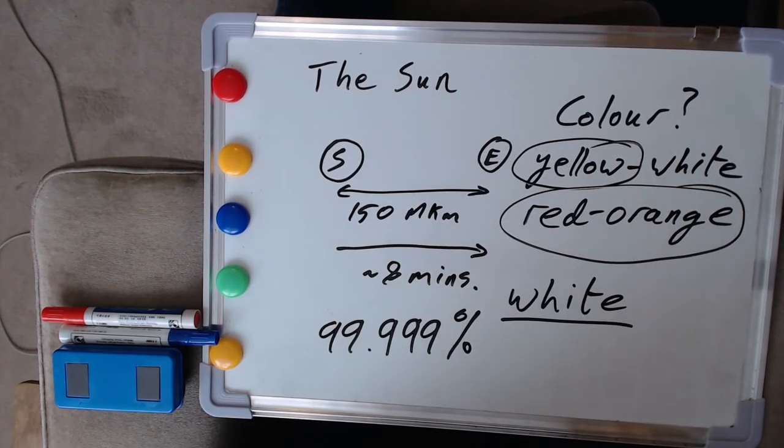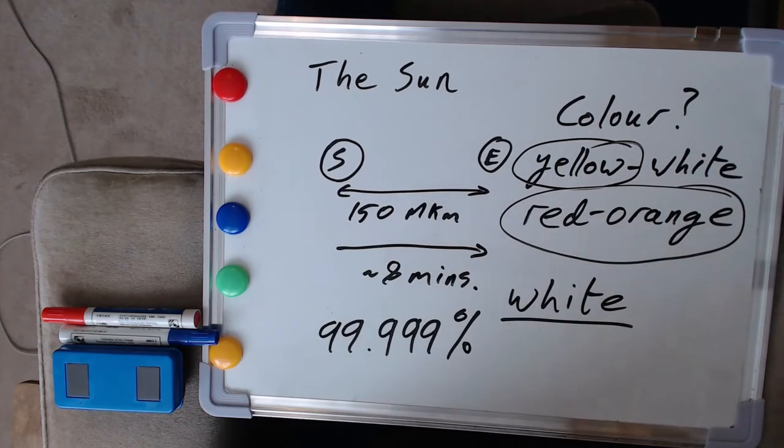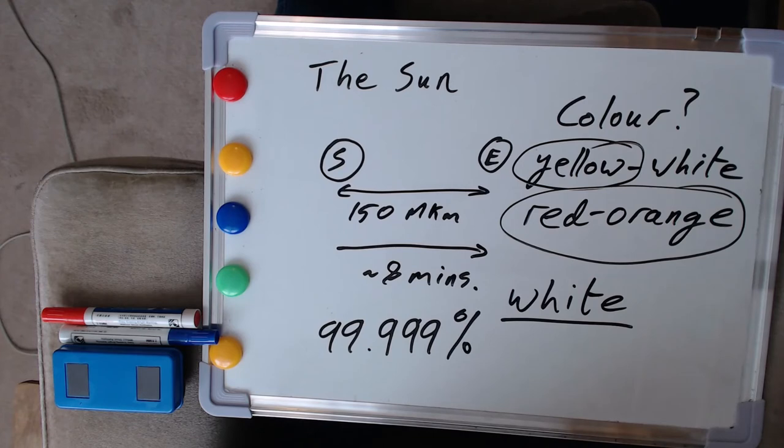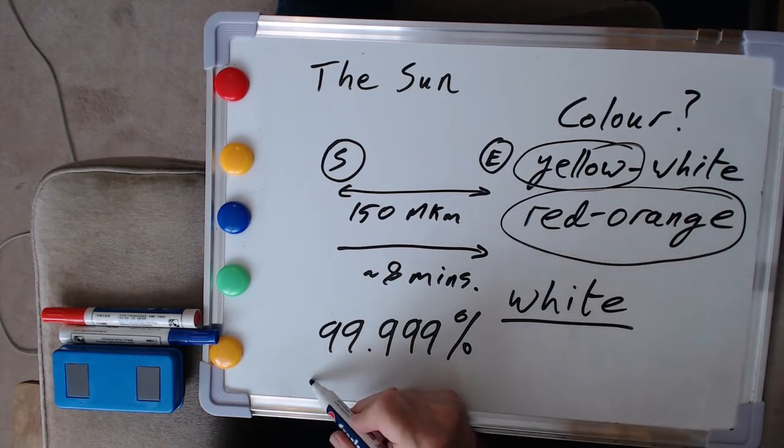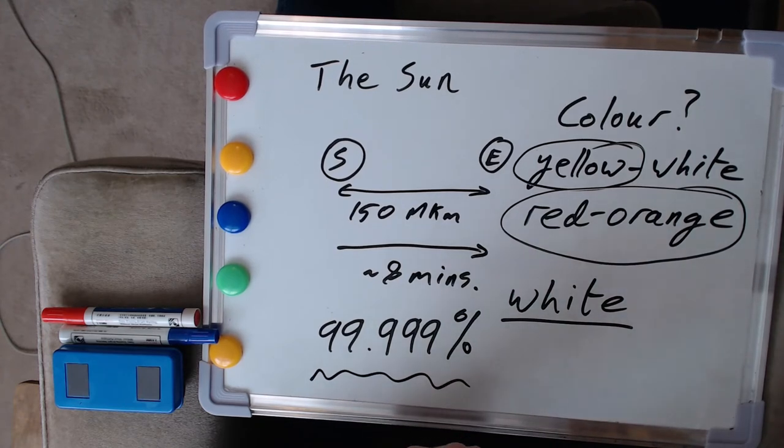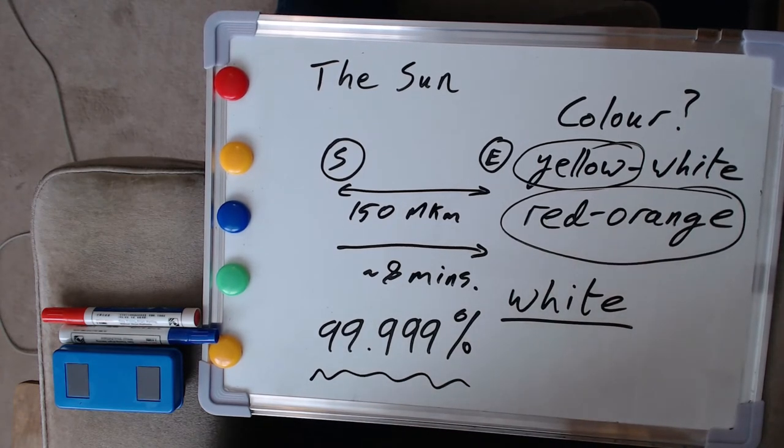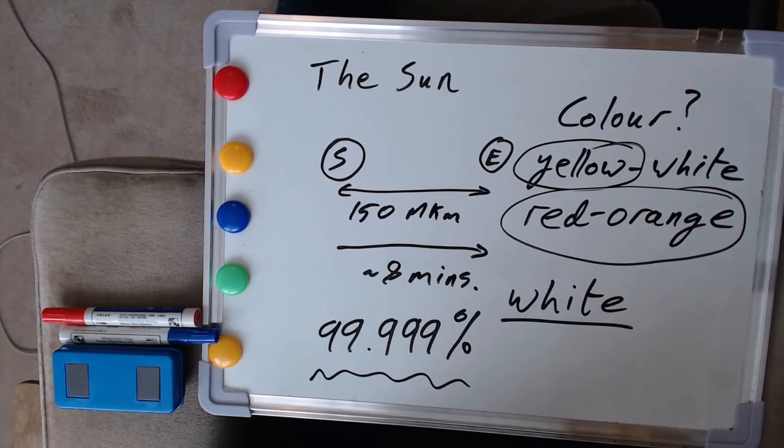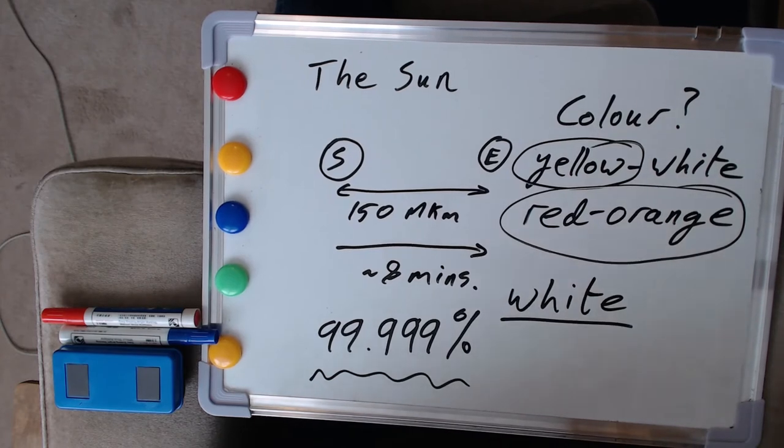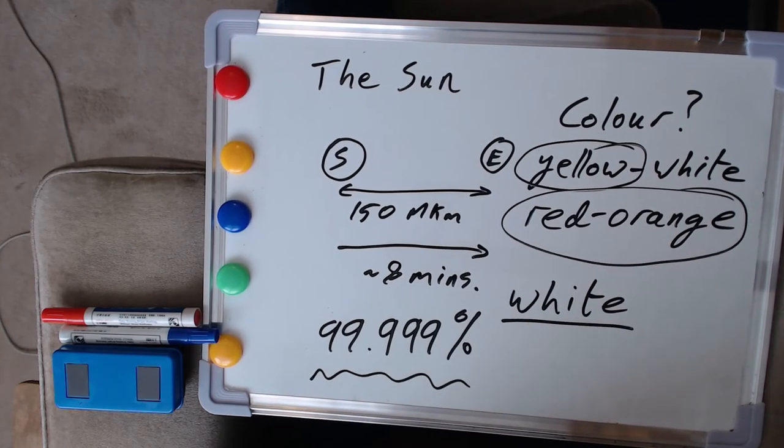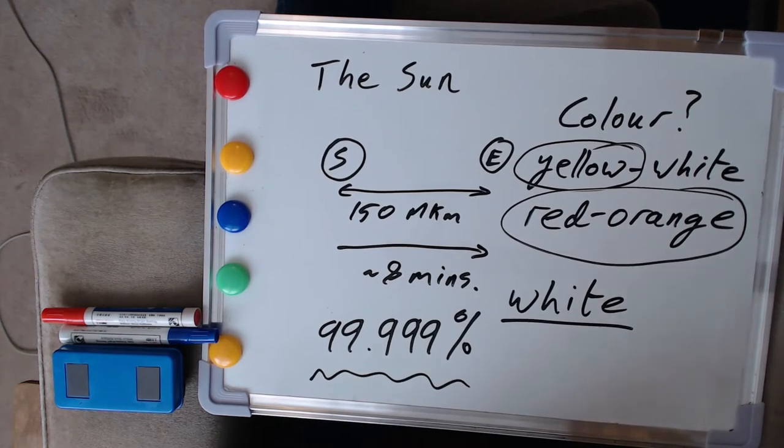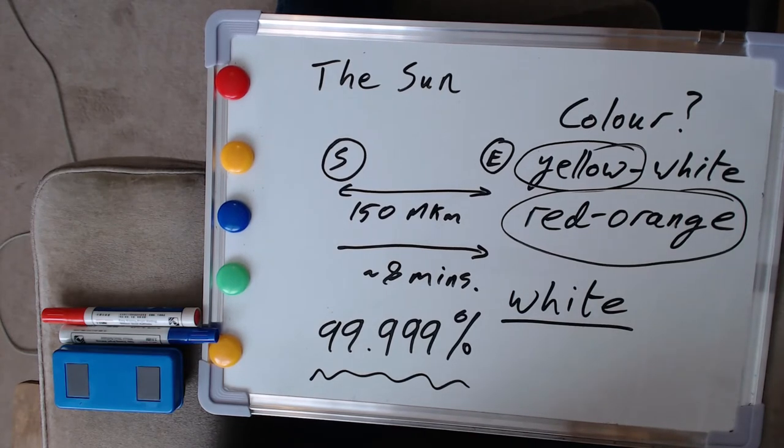And it renders it safe for looking at the Sun through telescopes or binoculars or whatever. Do not do this without appropriate filters of this sort. You probably already know this, but you can cause severe damage to the retinas in your eyes and possibly permanent damage that is irreversible. So do take this carefully. So that's the Sun in terms of its color.